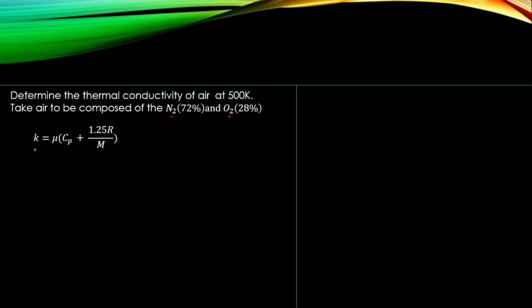The thermal conductivity relates to viscosity through: k = viscosity × (cp + 1.25R) / molecular weight. Here, cp = (5/2)R, where R is the ideal gas constant equal to 8.3144 J/(mol·K). You substitute these values to evaluate thermal conductivity.